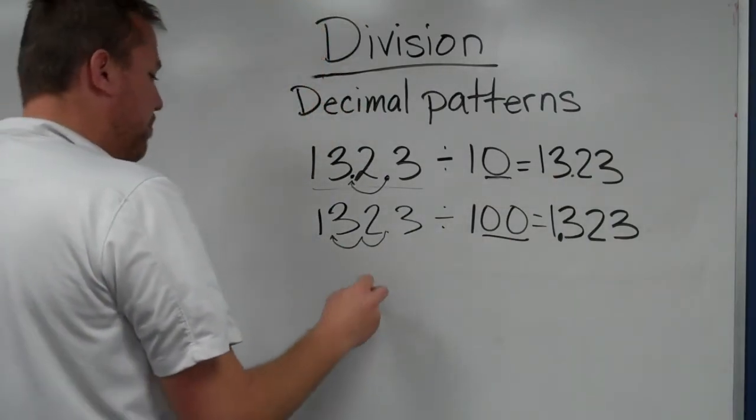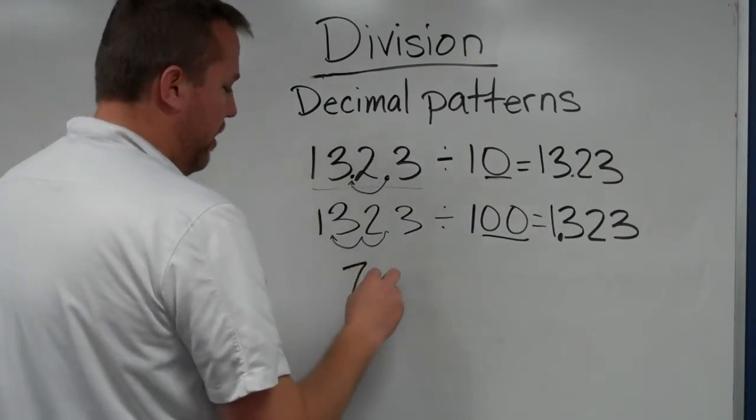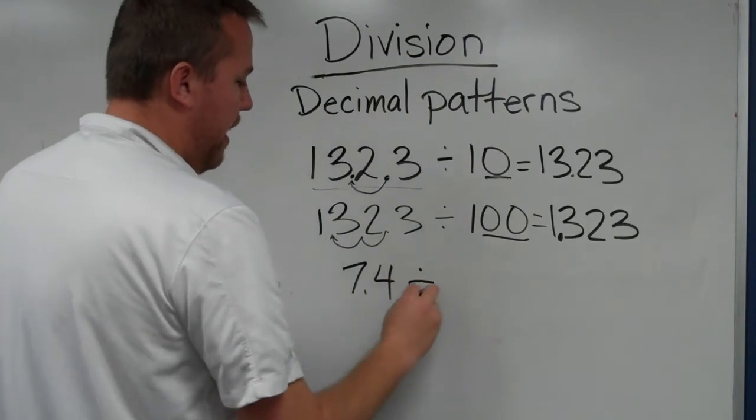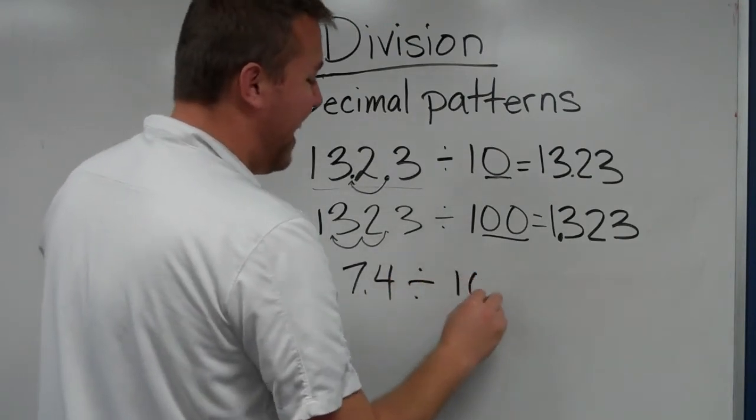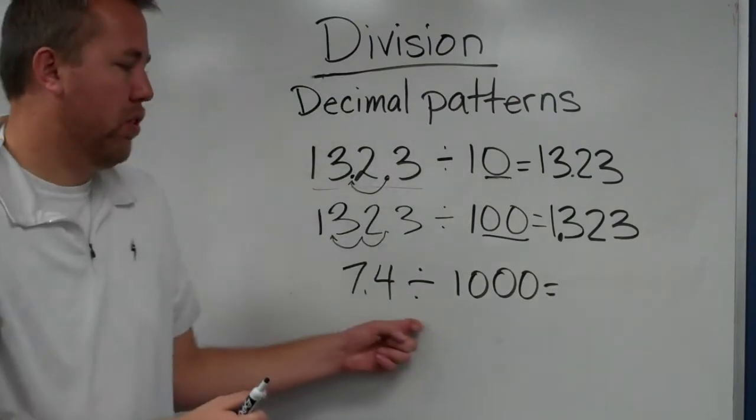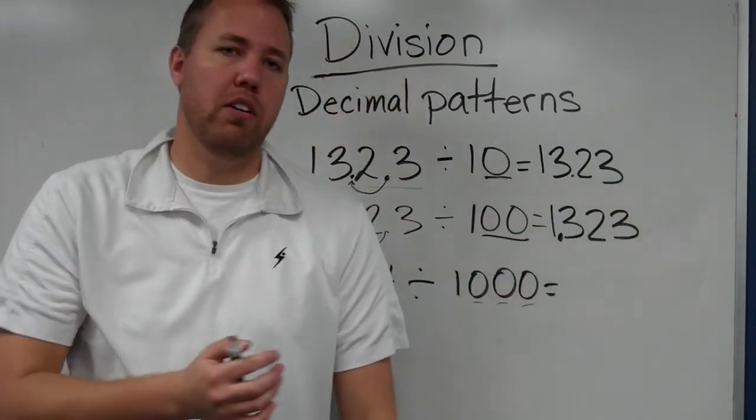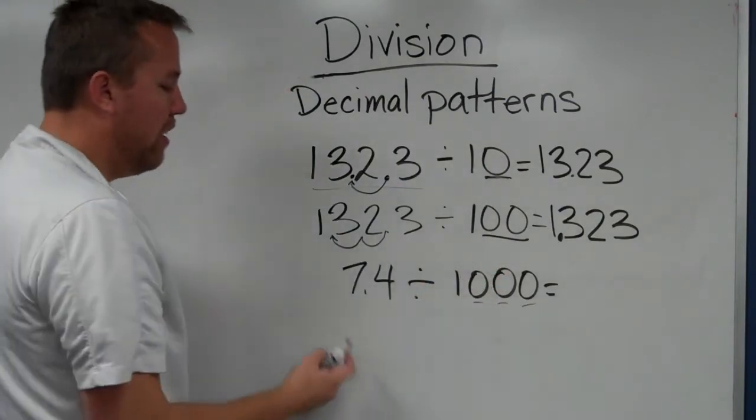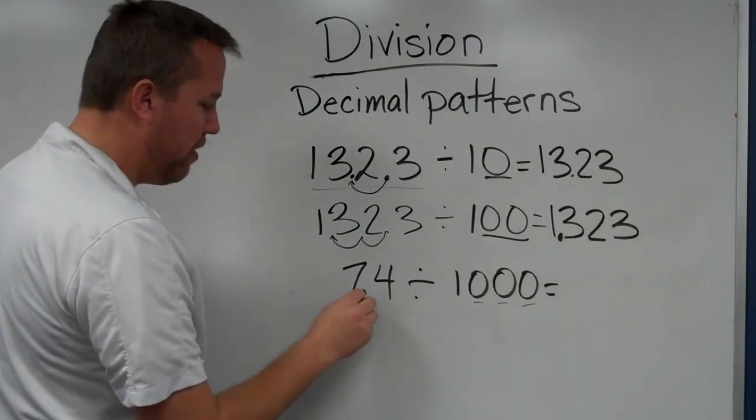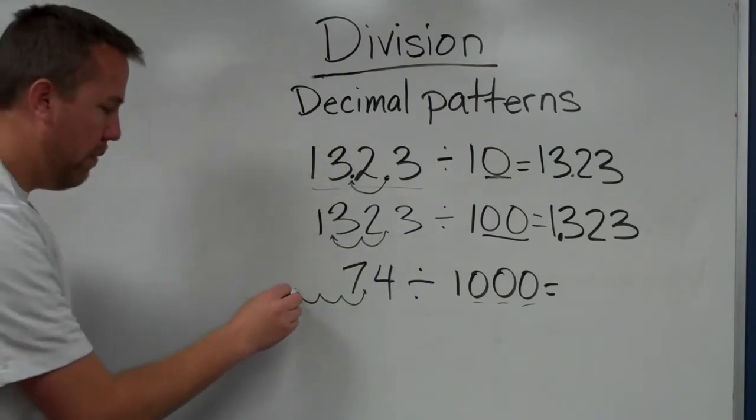Now, sometimes, say we just have, give me number 7.4 divided by, let's say, one thousand. Okay. 7.4 divided by one thousand, there are one, two, three digits that we are dividing by, three place values. So we would need to move it three places, but we don't have that many numbers right there.